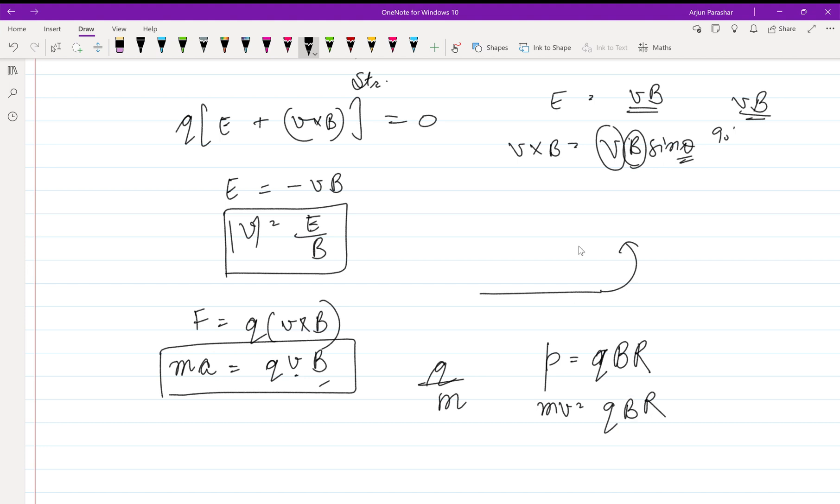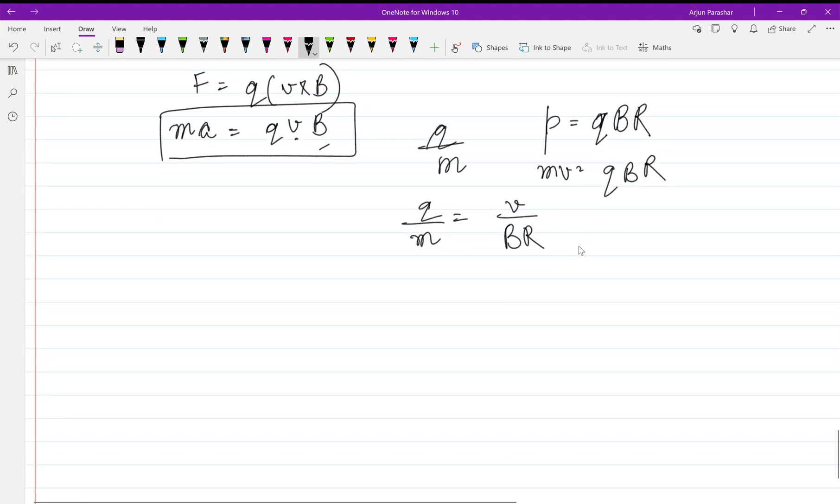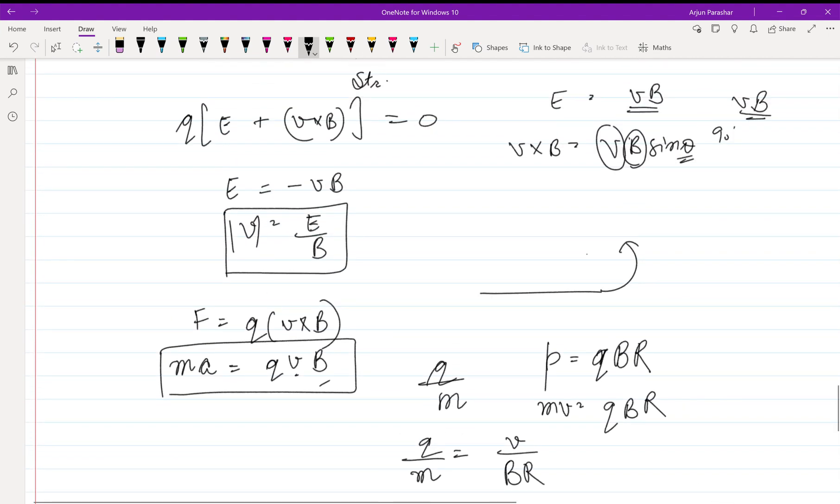Now we need q by m, so taking q by m aside we get v upon BR. This is the ratio of q and m, but we need E, so we'll be using the relation v = E/B. Just putting it here: E upon B²R. This is the relation for the q by m ratio.